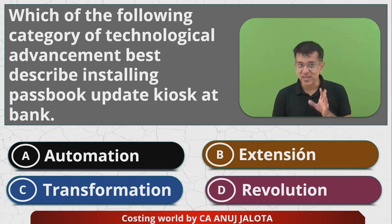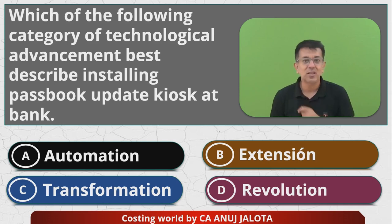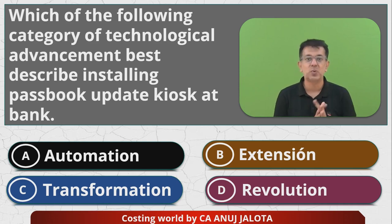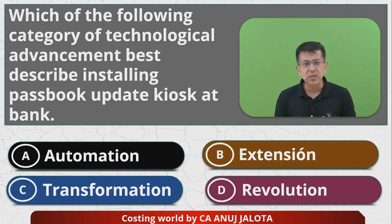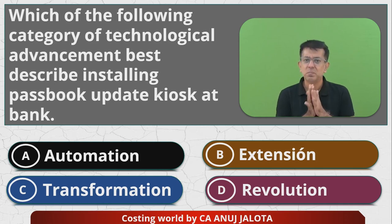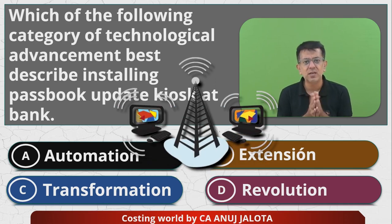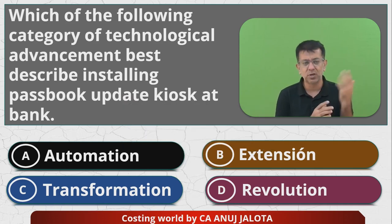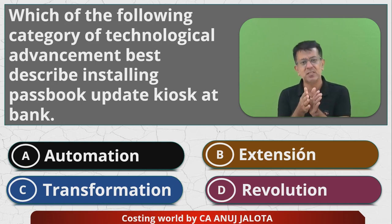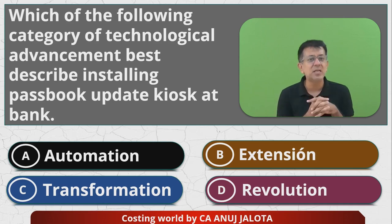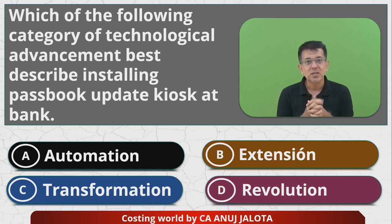Before I start, you should know the meaning of these four things. I'll start with the easiest one — D is revolution. Revolution, for me, is basically something that changes how everything is done. The best example is the internet. Although it came long before, its impact started to be felt after the 1990s.